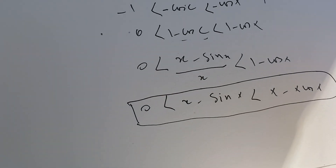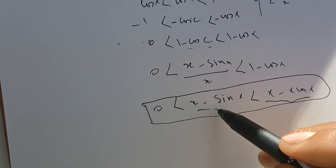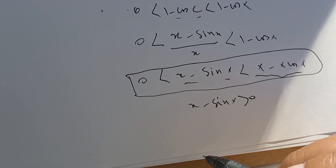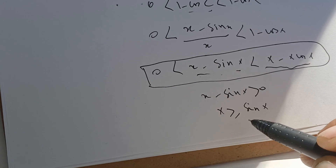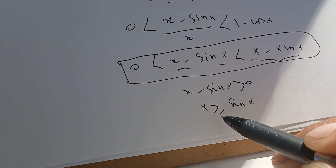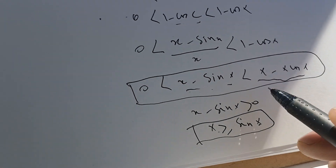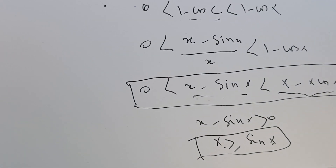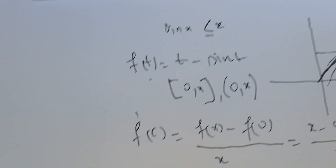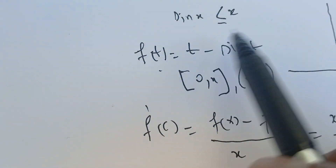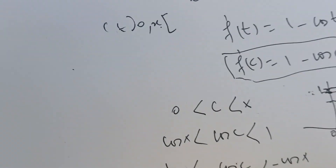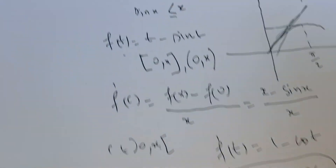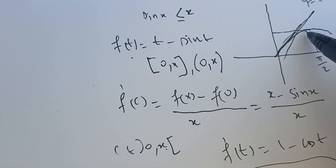From the Mean Value Theorem we sometimes get free results we don't even need. The key result we want is this: x minus sine(x) is greater than zero, which means x is bigger than sine(x). Adding the zero case gives us the inequality with the equal sign. So this proves that x is bigger than or equal to sine(x) using the Mean Value Theorem — a very important and powerful tool. We checked the conditions, computed the derivative, and bracketed f'(C) to get the result.